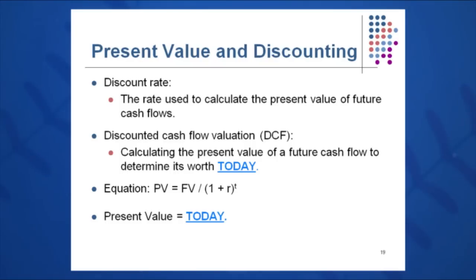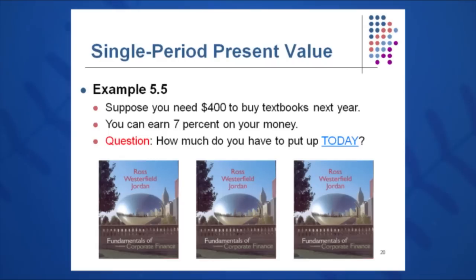How much do I need to invest today to get that million dollars in the future? By just moving some of the variables around, we solve for PV: PV equals FV divided by 1 plus R to the T. Present value means today — that's one thing we want to emphasize.